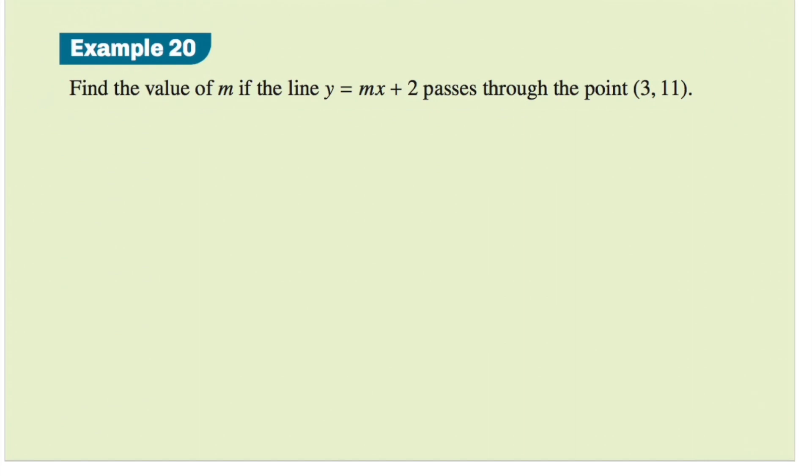Example 20. Find the value of m, the gradient, if the line y equals mx plus 2 passes through the point (3, 11). We know that the first value in a coordinate corresponds to the x value. The second value corresponds to the y value. We also use the number machine as an analogy to explain the input and output. This is saying that when x equals 3 and we plug this value into the equation, the output y will equal 11.